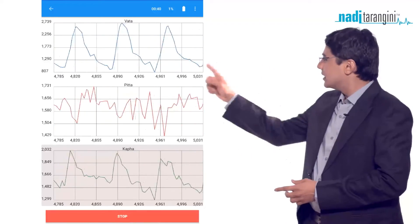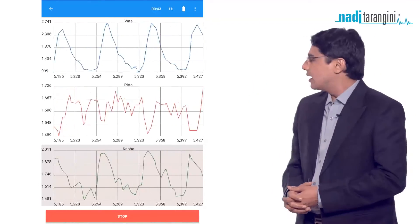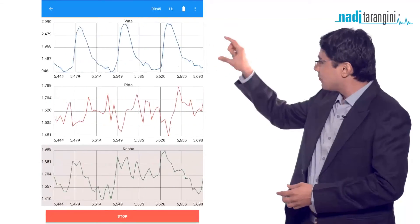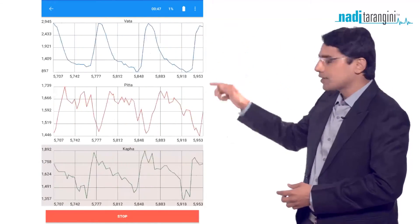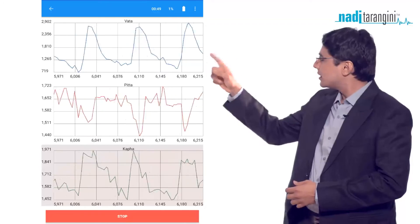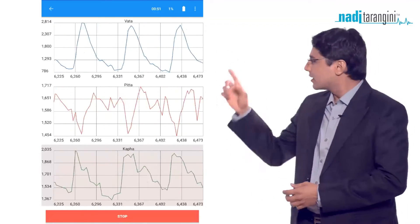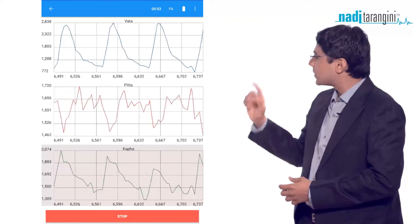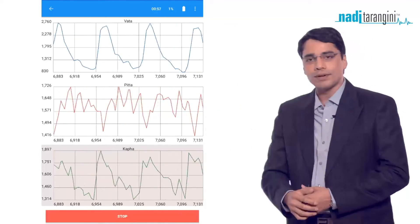Every example is a pulse signal of five seconds. Each example has three different colors: blue represents Vata signal, red represents Pitta, and green represents Kapha.